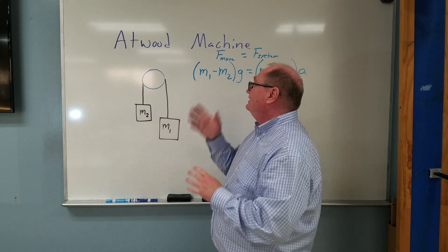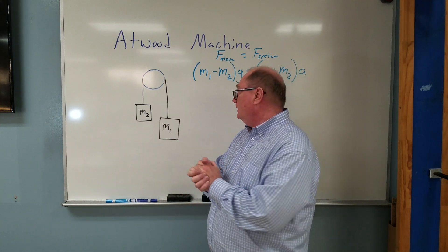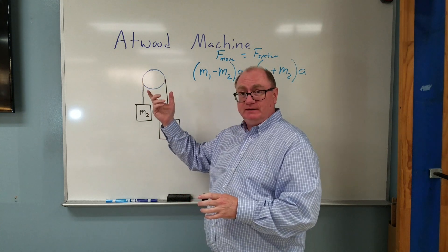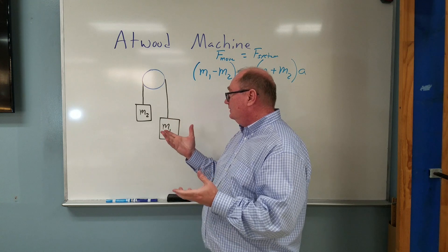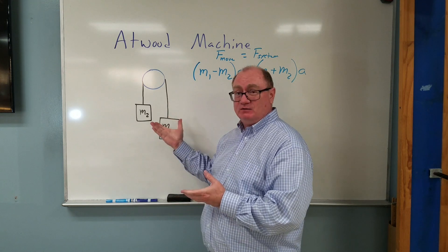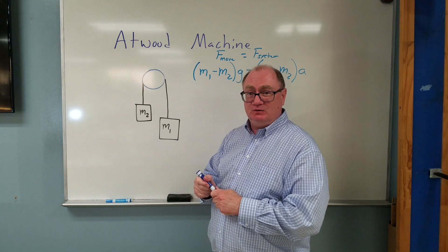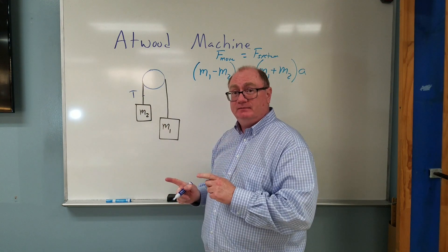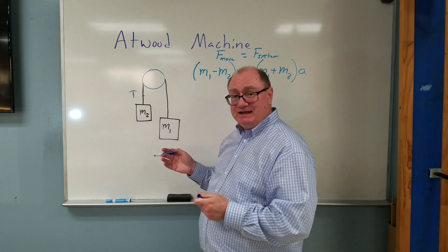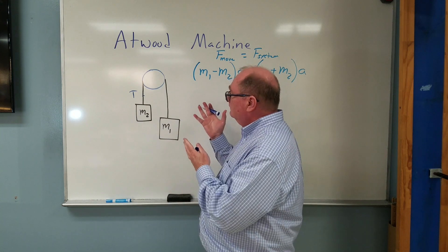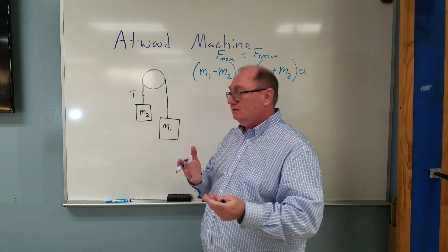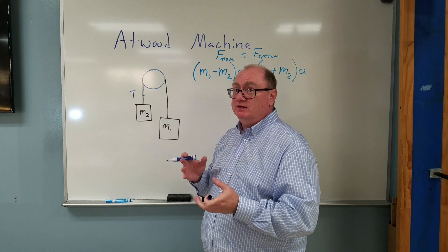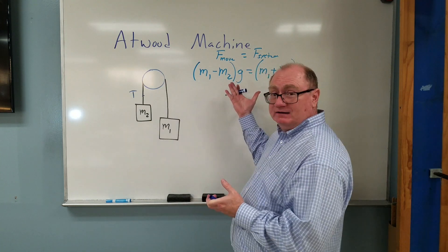Hi, this is Ken Lee and today we're going to investigate the classic Atwood problem where we have two different masses suspended by a wire over a pulley. We usually have to determine the acceleration of the system and possibly the tension in the wire. In today's lab we're going to get data on three different Atwood systems so you can figure out the acceleration of the system and compare it to what the acceleration should be theoretically.